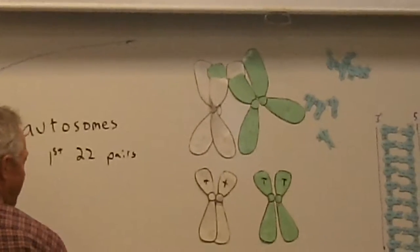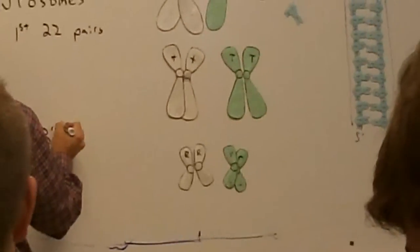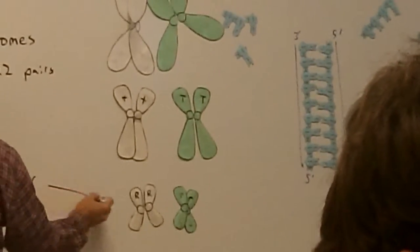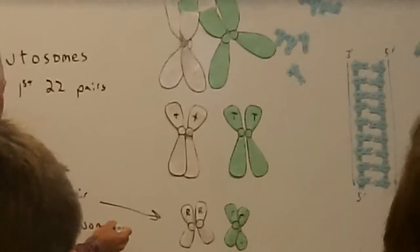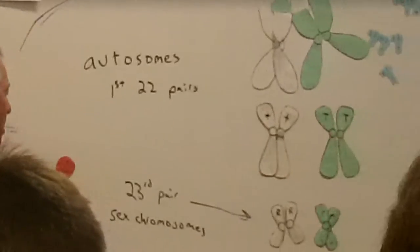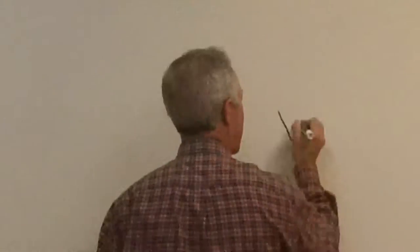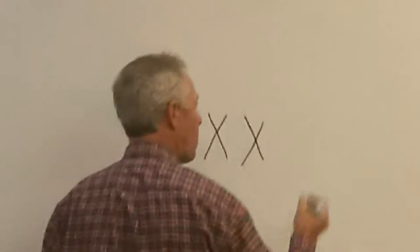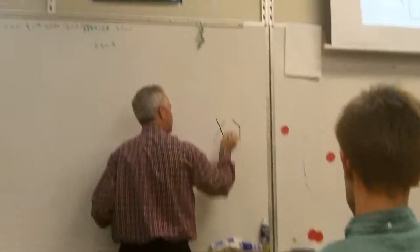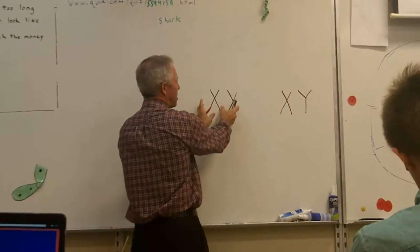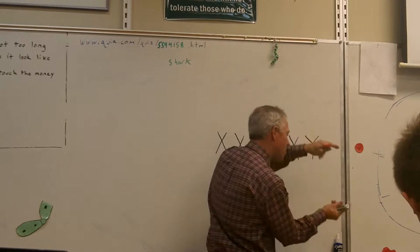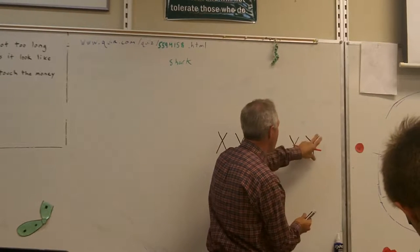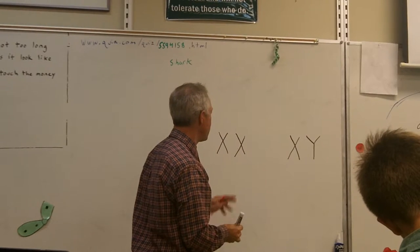But the last pair, the 23rd pair, those are your sex chromosomes. The 23rd pair are your sex chromosomes. And they come in two types. A female has two, what we call, X chromosomes. And a male has an X and a Y. So if you're a female, you inherited these two X chromosomes. And the X chromosomes are actually rather large chromosomes. But the Y chromosome is a real small chromosome. The Y is much smaller than the X. These are your sex chromosomes.